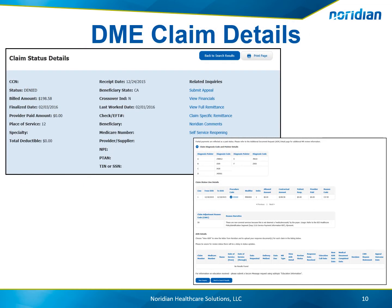For DME, the claim status details are very similar. A summary of the claim is provided, along with the diagnosis code and pointers, and the claim line details, in addition to the claim adjustment reason code and applicable ADR details.